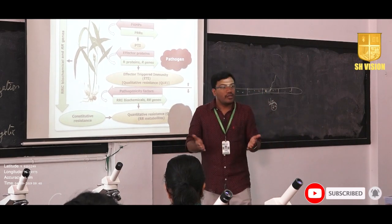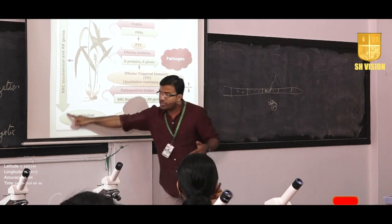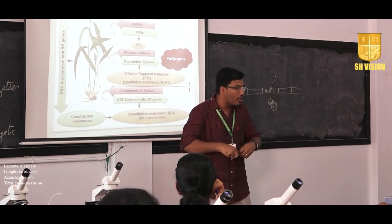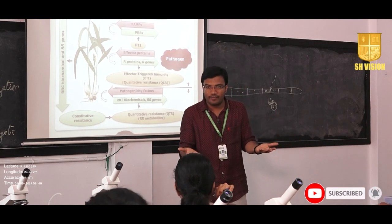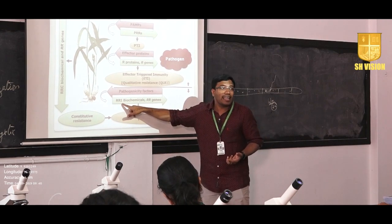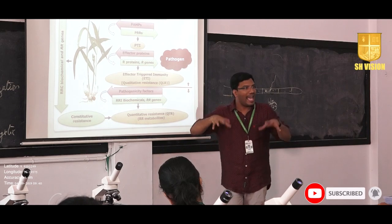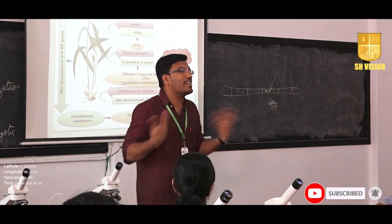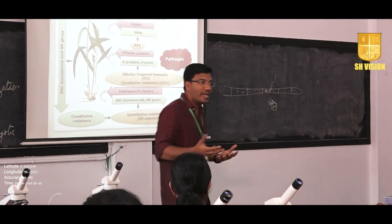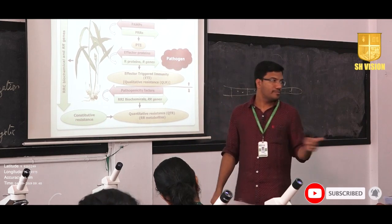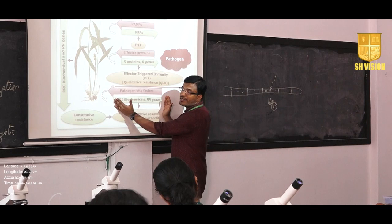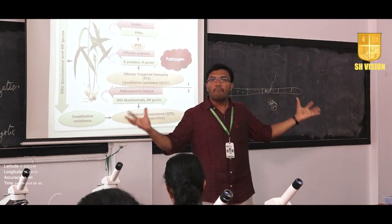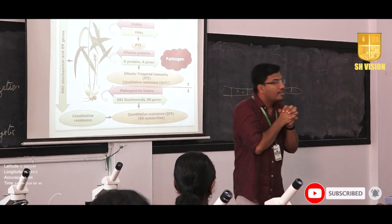Plants normally have secondary metabolites already present inside the plant — we call these constitutively produced metabolites. But after pathogen infection, the plant will ignite or induce an extra amount of secondary metabolites. The plant will boost its production of secondary metabolites, and those boosted secondary metabolites are known as resistance-related induced biochemicals. With both the constitutively produced secondary metabolites and the resistance-related induced biochemicals, the plant attacks the toxin in order to neutralize it.